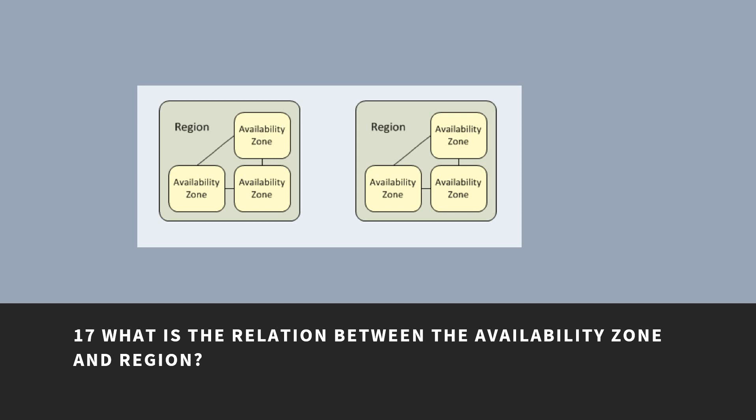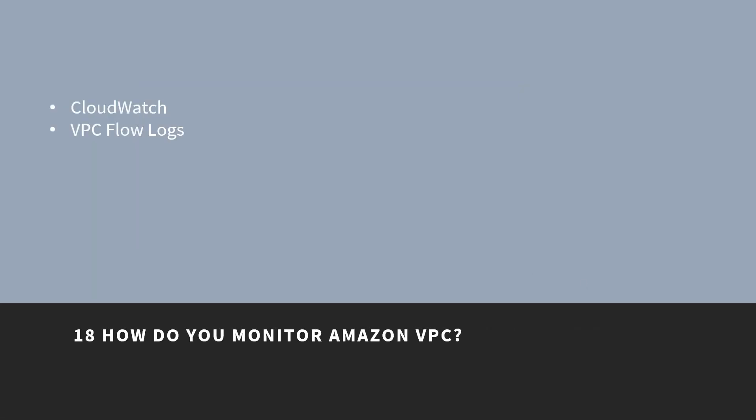What is the relation between Availability Zone and Region? An AWS Availability Zone is a physical location where an Amazon data center is located. An AWS Region is a collection of Availability Zones or data centers. How do you monitor Amazon VPC? You can monitor Amazon VPC using CloudWatch and VPC flow logs.